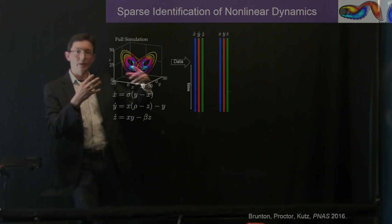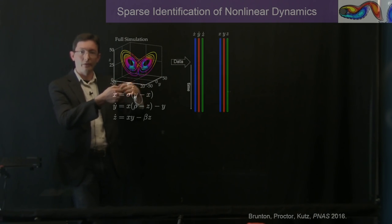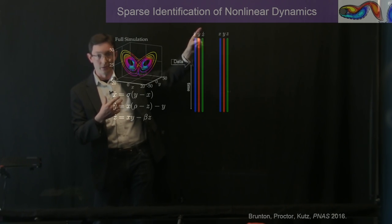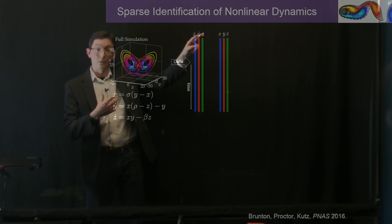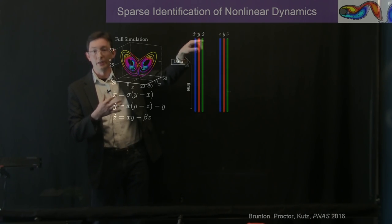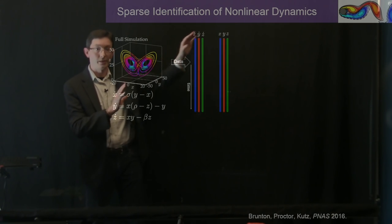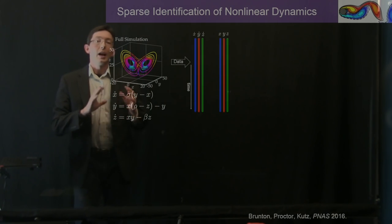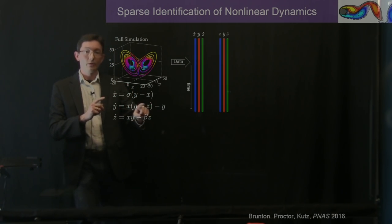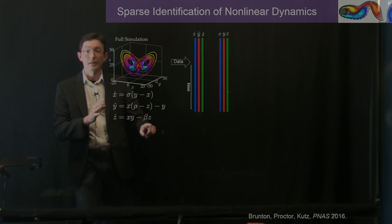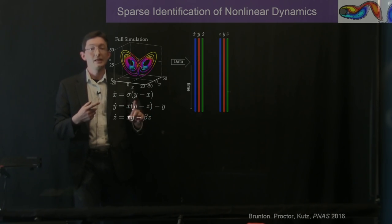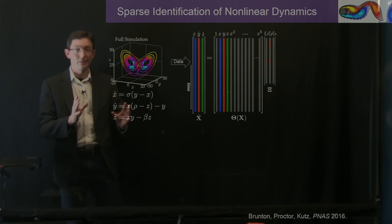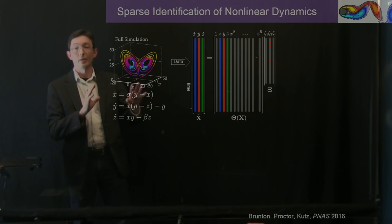What we do is run simulations of our system, or collect measurement data from a real experiment. We collect the data into vectors x, y, and z going down in time, and also x-dot, y-dot, and z-dot. We'll drop the condition that we need derivatives in a little bit, but for now let's assume we have x, y, z, and their time derivatives as big vectors. Remember that out of all possible right-hand side functions, the actual dynamics for this system — and for lots of systems — happens to be sparse in the space of possible right-hand side functions.